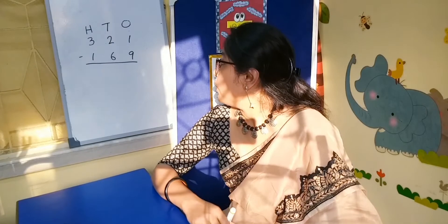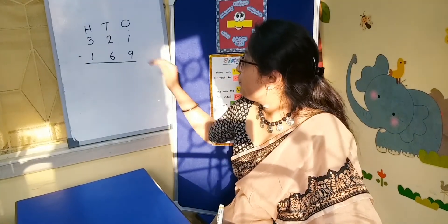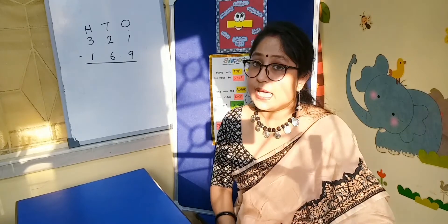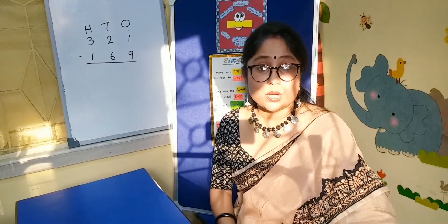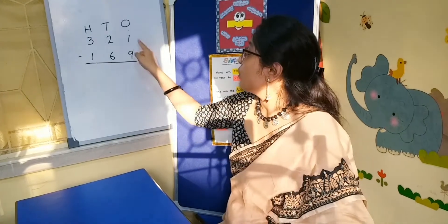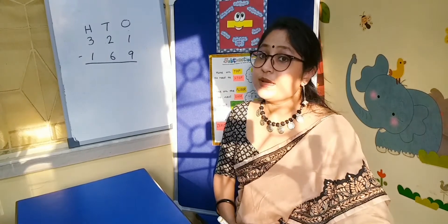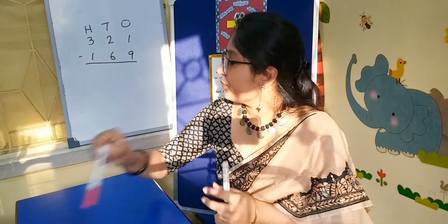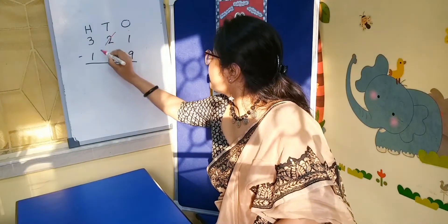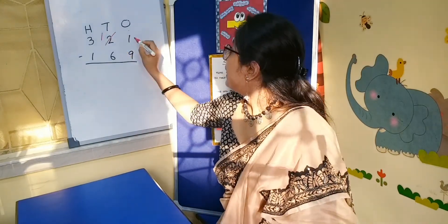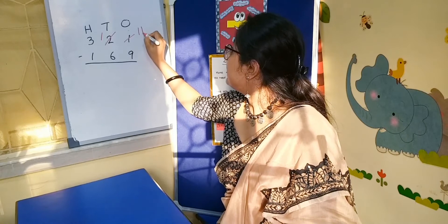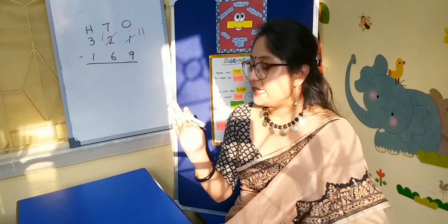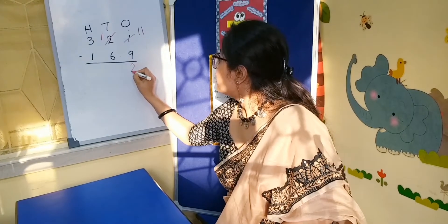Now as you can see, here there is more on the floor and less on the top. We cannot subtract 9 from 1. So what will we do? We will borrow 1 ten from 2. So 1 becomes 11. Now you can subtract 9 from 11: 9, 10, 11 — that is 2.